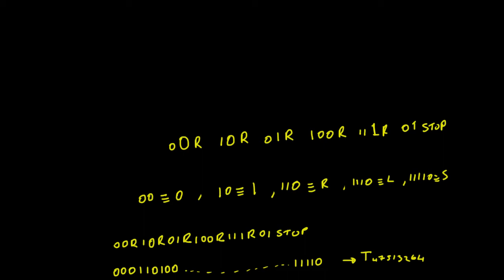In this video we're going to look at the question: is there a general algorithm for answering all mathematical questions — a master algorithm? I've written this out already to make it a bit quicker. Let's imagine we have an algorithm written down in the format we've seen in the previous video, with instructions separated by commas — for example: zero zero R, one zero R, zero one R — until we get to the stop position. There's no data here; this is only representing the algorithm.